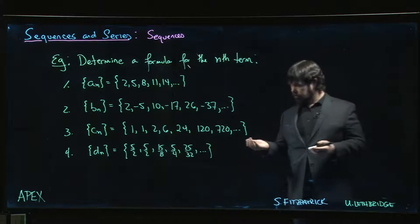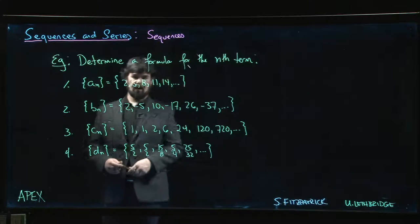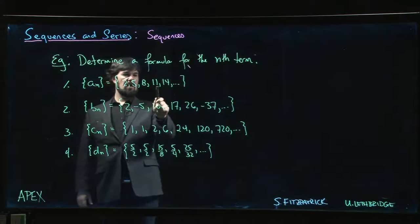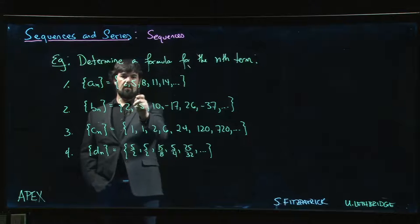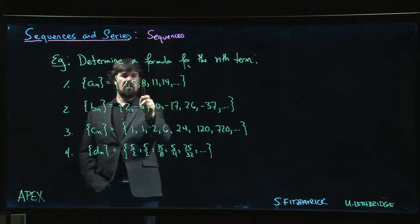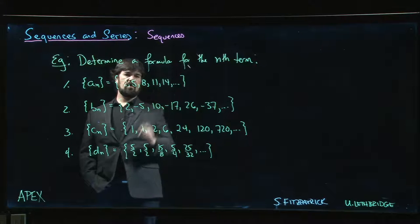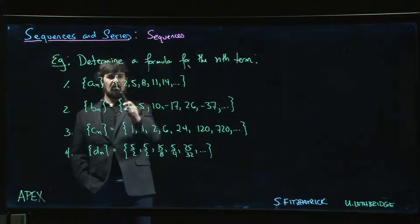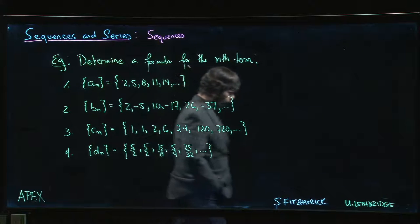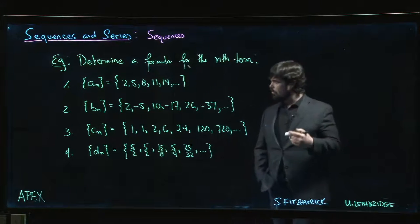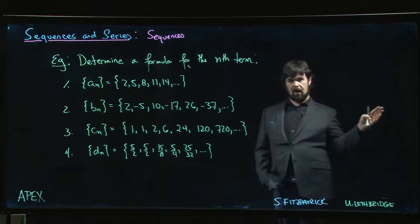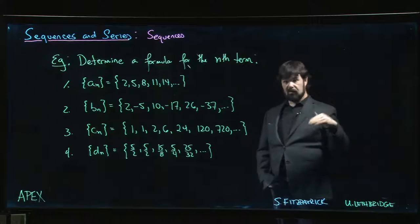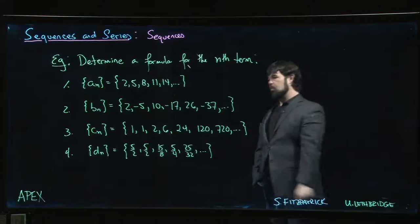In the first example we're looking for a pattern: 2, 5, 8, 11, 14. It looks like we're going up by 3 every time — 2 plus 3 is 5, 5 plus 3 is 8, and so on. What you want to do is look at differences between terms to see if there's a pattern, or maybe divide to see if there's a pattern in the quotients.